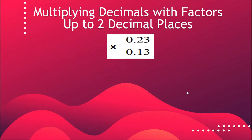For this one, we will multiply twenty-three hundredths times thirteen hundredths. Let's do this: three times three is nine. Three times two is six. When we multiply decimals, just continue multiplying just like what we do when we multiply whole numbers. We are just going to add the decimal point later on after we already find our product.